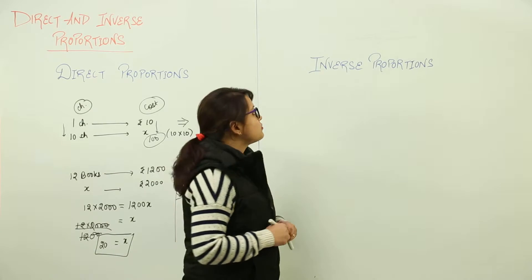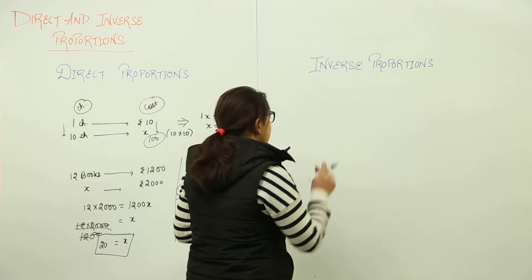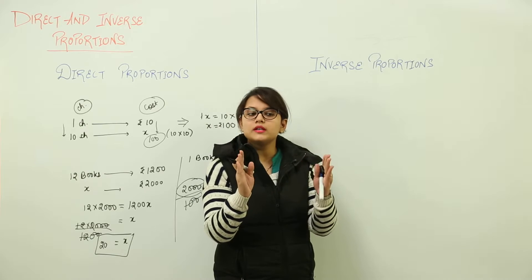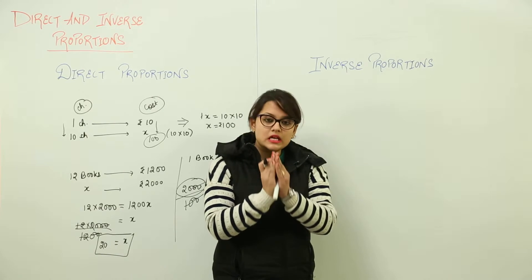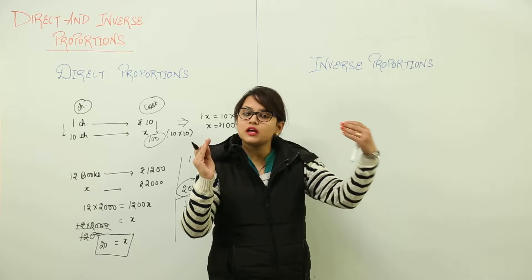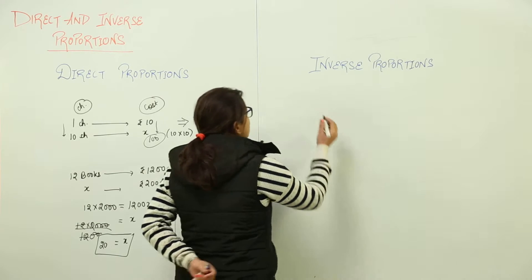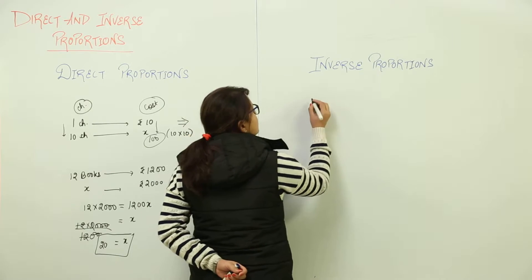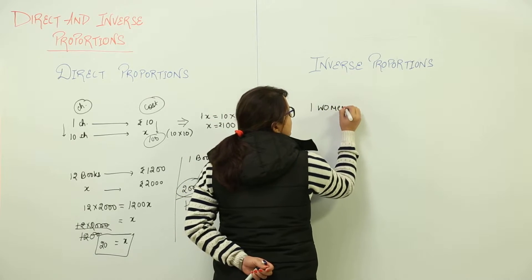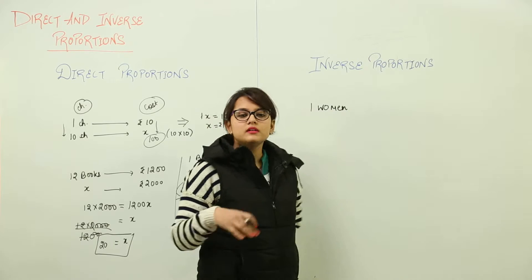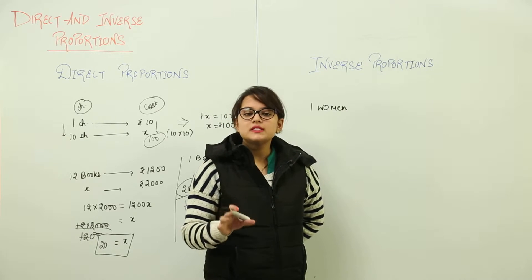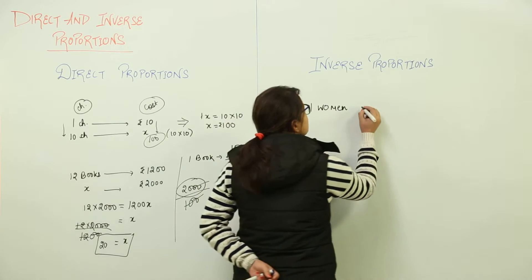In inverse proportions the relation is opposite: as one quantity increases, the other decreases. Let us take an example. If one woman is employed to cook food at a party, she takes 60 minutes to finish the work.